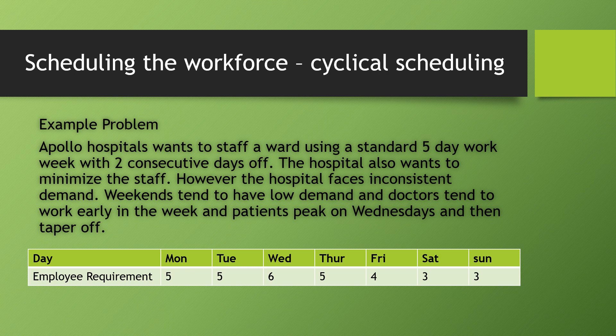For scheduling the workforce, we use a technique called cyclical scheduling. The problem is: Apollo Hospital wants to staff a ward using a standard five-day work week with two consecutive days off. The hospital wants to minimize staff. Demand is inconsistent — weekends have low demand, doctors tend to work early in the week, and patient demand peaks on Wednesdays then tapers off. The daily doctor requirements are: Monday 5, Tuesday 5, Wednesday 6, Thursday 5, Friday 4, Saturday 3, Sunday 3.